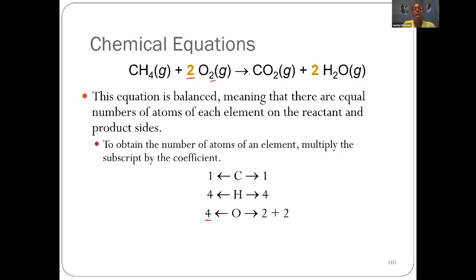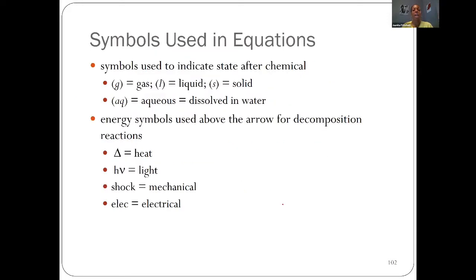On the product side we have one carbon, four hydrogens (two times two), and our oxygens are two times one plus two, giving us a total of four.